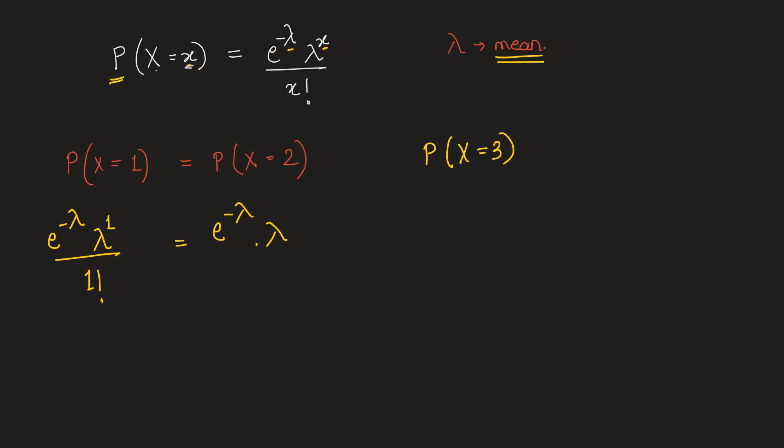It is easier to substitute like this so that e to the power minus lambda from both sides can be divided, and we will be left with lambda to the power 1, which is lambda itself, divided by 1 factorial which is 1.